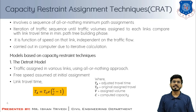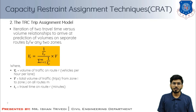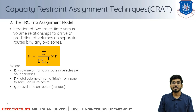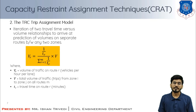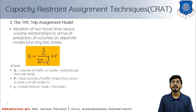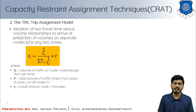The second model is the TRC trip assignment model, which is part of the CRAT model. This model involves two travel time versus volume relationships used iteratively to arrive at predictions of volume on separate routes between any two zones. The equation for predicting volume on route R is: VR = (1/TR) / Σ(1/TR), for R = 1 to M, multiplied by V, where VR is the volume of traffic on route R in vehicles per hour per lane, V is the total volume of trips from zone I to zone J on all routes M, and TR is the travel time on route R in minutes.